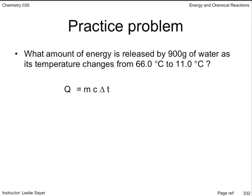We start by restating the kinetic energy expression: Q equals MC delta T. We're looking for the amount of energy, Q. We can expand delta T to show that it's derived by the difference between the final temperature and the initial temperature. Since the temperature is dropping, we should expect the loss of energy to yield a negative answer.